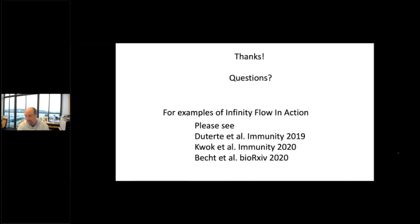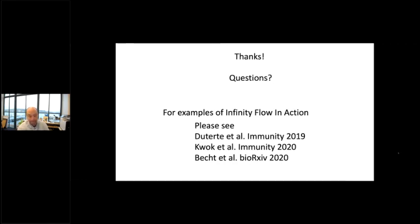Question from Wade: is it a problem if a backbone marker also appears in the infinity panel? Not at all — in fact, for the data shown, almost every backbone marker also has a place in the infinity panel. It actually serves as a sanity check: if the method doesn't do a good job imputing data that is actually measured, that would be a problem. We generally find it's essentially one-to-one. The PE channel for the infinity markers sometimes actually gives a slightly better signal than what's in the backbone for certain markers.